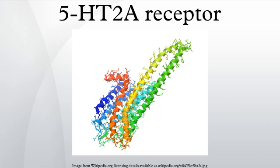History: Serotonin receptors were split into two classes by Gaddum and Picarelli when it was discovered that some of the serotonin-induced changes in the gut could be blocked by morphine, whilst the remainder of the response was inhibited by dibenzylene, leading to the naming of M and D receptors respectively. 5-HT2A is thought to correspond to what was originally described as the D subtype of 5-HT receptors by Gaddum and Picarelli.